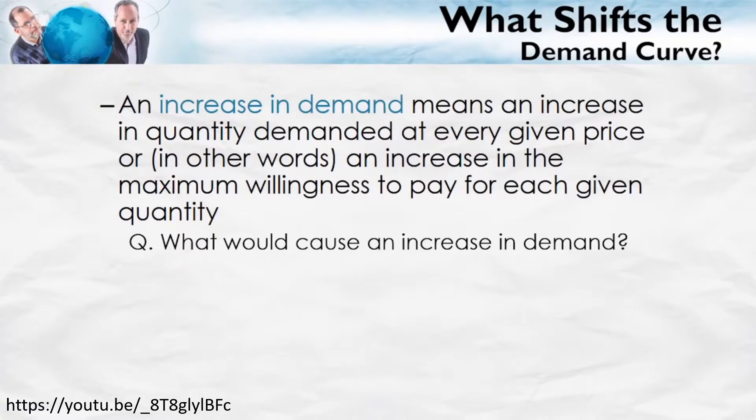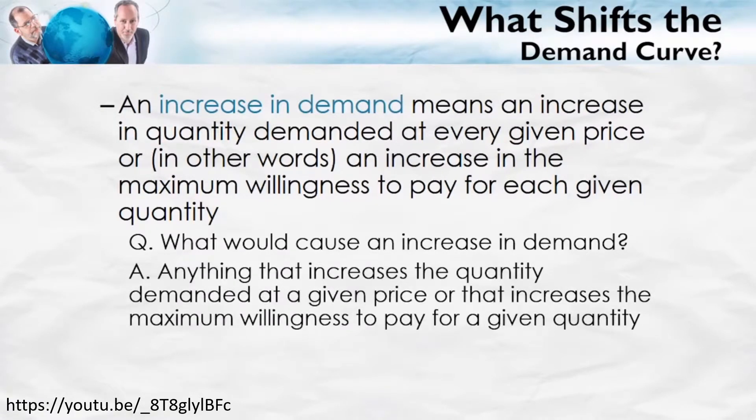What would cause an increase in demand? The answer is anything that increases the quantity demanded at a given price, or that increases the maximum willingness to pay for a given quantity. Think of factors which would make consumers willing to pay more for a good, or want a greater quantity at a fixed price — those are the types of factors which shift the demand curve. If you understand what an increase in demand means, you'll always be able to identify such factors.